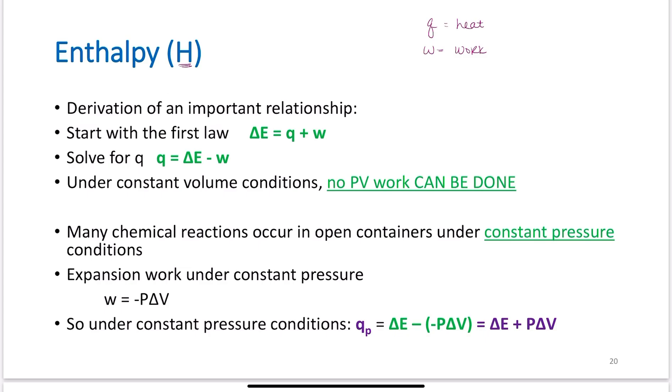Rearrange that equation and solve for Q. We get ΔE minus W equals Q. Under constant volume conditions, no PV work can be done. So, PV work - pressure volume work - was covered in module 7B. If you're confused about PV work, go back and watch module 7B. Under constant volume conditions, no PV work can be done because we cannot have a change in volume if the volume is constant.